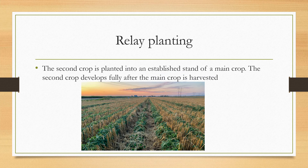Coming to relay planting, here you can see in the picture that the main crop is first established, and after the harvesting of the main crop, a second crop is then developed. This is called relay planting.